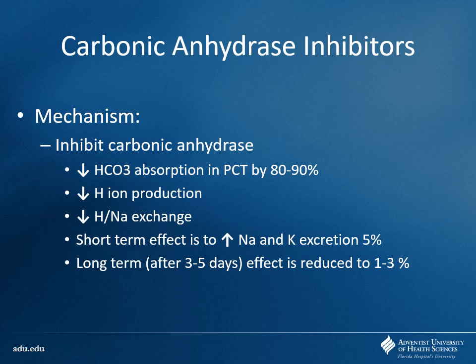Carbonic anhydrase catalyzes the conversion of CO2 and water into bicarbonate, and also converts bicarbonate back into CO2 and water. Bicarbonate has a negative charge and doesn't cross membranes easily, but CO2 and water cross very easily. By controlling this, we change water flow — in the kidneys, more fluid stays in the renal tubules and gets excreted as urine, producing the diuretic effect.